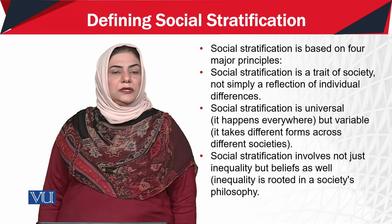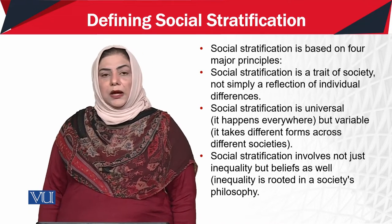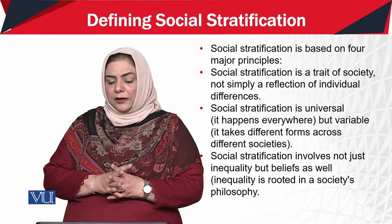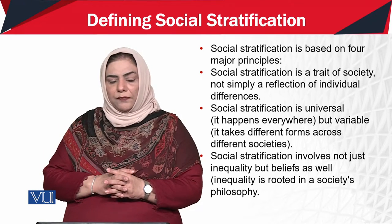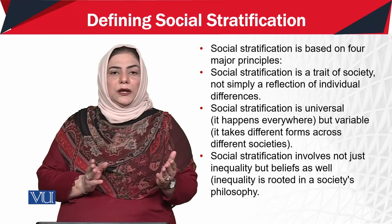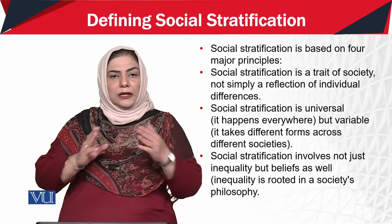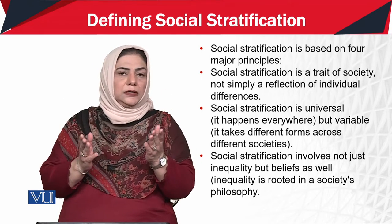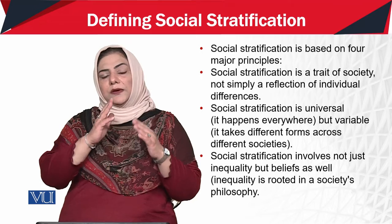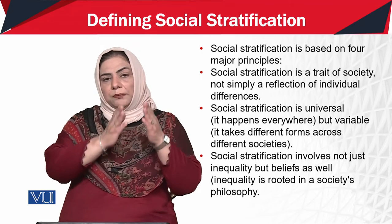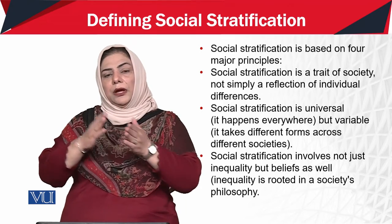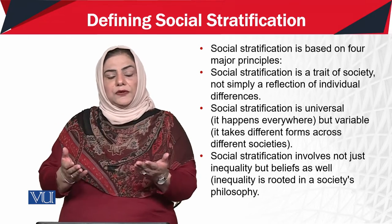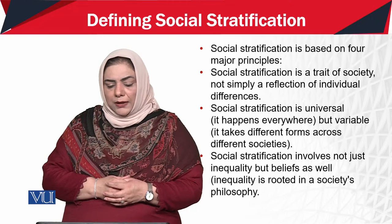So, stratification is universal. It happens everywhere but variables, they can be different across from society to society. Yani ye ek universal concept hai, har jagah par paayi jati hai. Haan, ye ho sakta hai ki kisi maushra mein koji ek symbol ziadha ahem hai, koji ek factor ziadha ahem hai. Ye cheez jow hai, ye mukhtalip ho sakti hai.